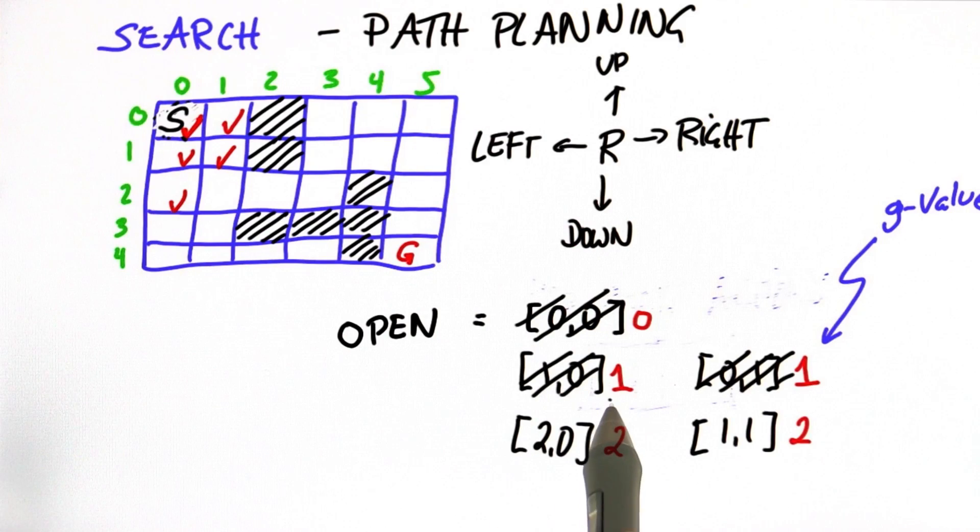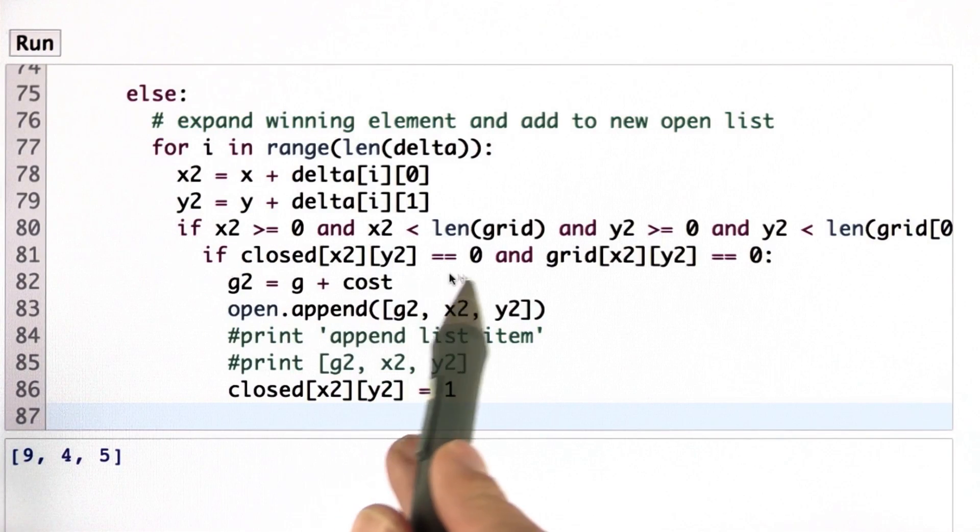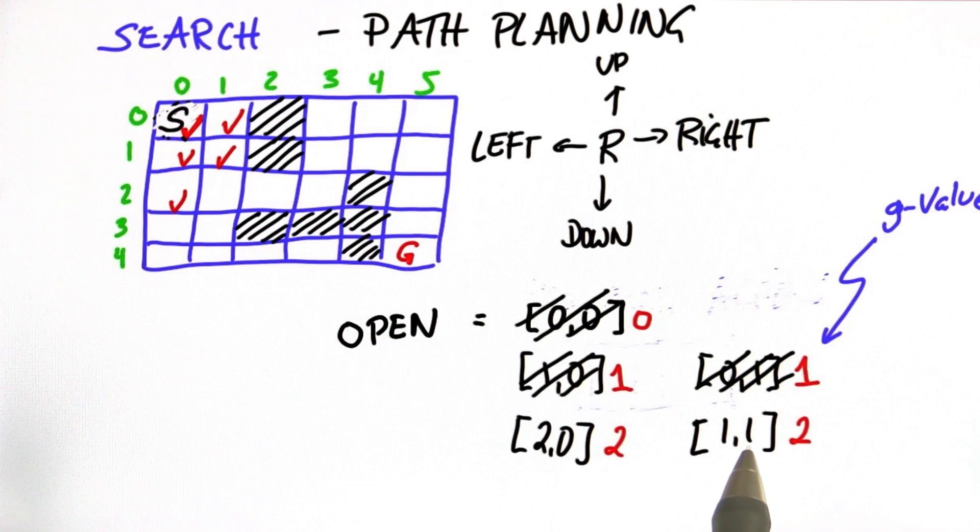I also checked whether there's already a checkmark at a cell, which is this test over here. And if this was always true, I added the new element to my open list with the new g value incremented and the new coordinates.